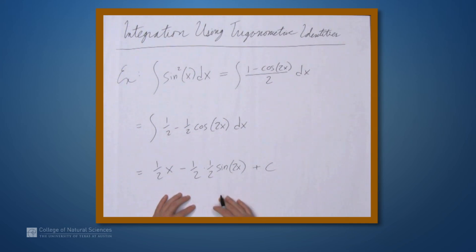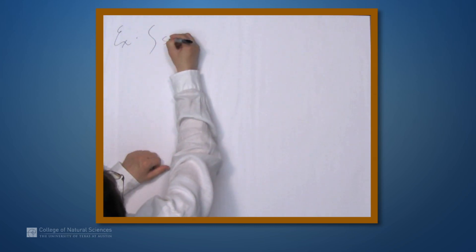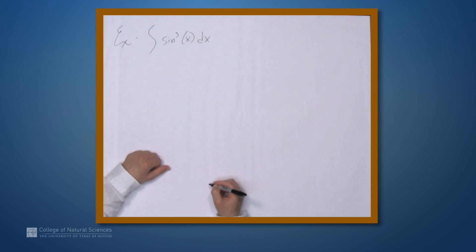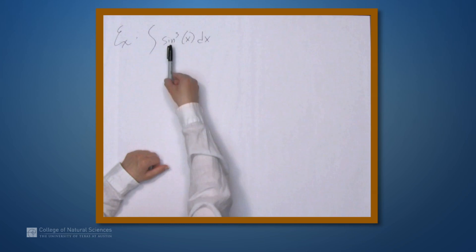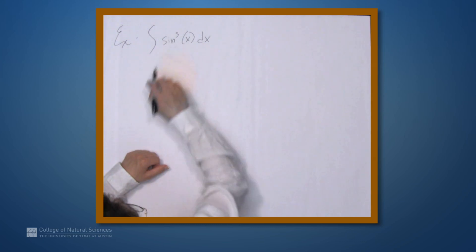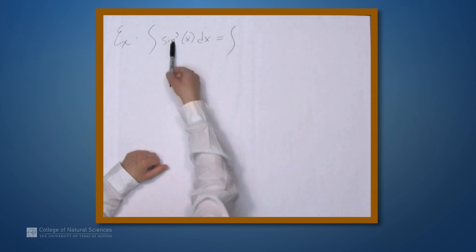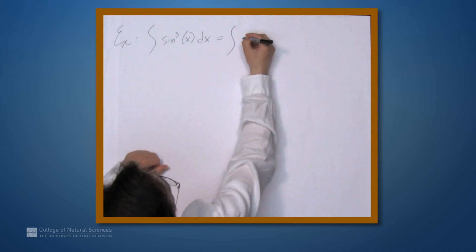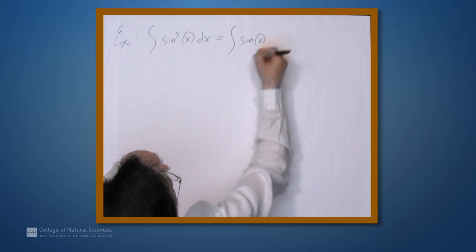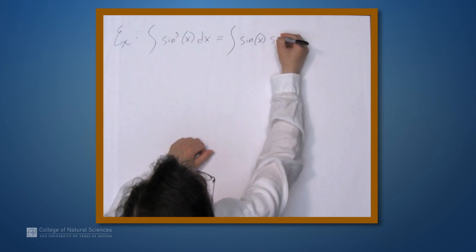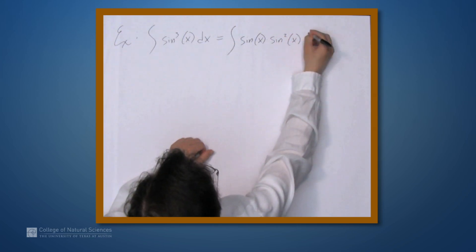Let's look at another example. Instead of sine squared this time, let's try the integral of sin³x dx. We could rewrite one sine squared within here the way we just did, but it's probably not as useful because now we have three copies of sine. One useful thing we can do is take one of them out, giving us sinx times sin²x dx.